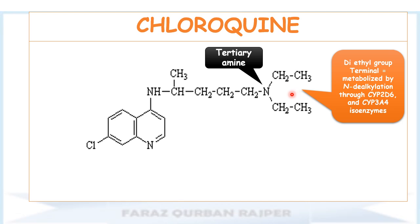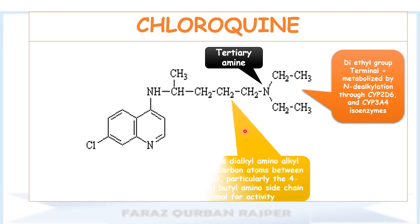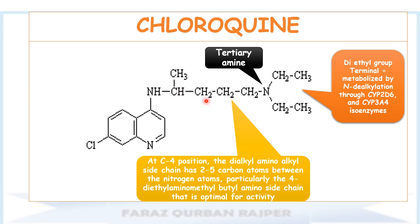N-dealkylation is one of the phase 1 oxidation reactions — for detail you may check my lecture on phase 1 metabolism reactions in medicinal chemistry. At the 4-amino side chain, the dialkylamino side chain is essential, meaning there should be a 2 to 5 carbon atom side chain between the two amino groups. Specifically, this diethylaminobutyl side chain — you may count 1, 2, 3, 4 — is a 4-carbon side chain between the two amino groups, and this is essential for the anti-malarial activity of chloroquine.